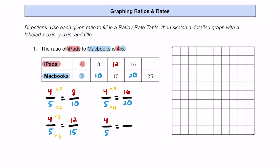For our last blank, we have 25 MacBooks. MacBooks are on the bottom, so we put 25 there. How does 5 become 25? It's times 5. So on top, 4 times 5 is 20. So for every 25 MacBooks, we should have 20 iPads.